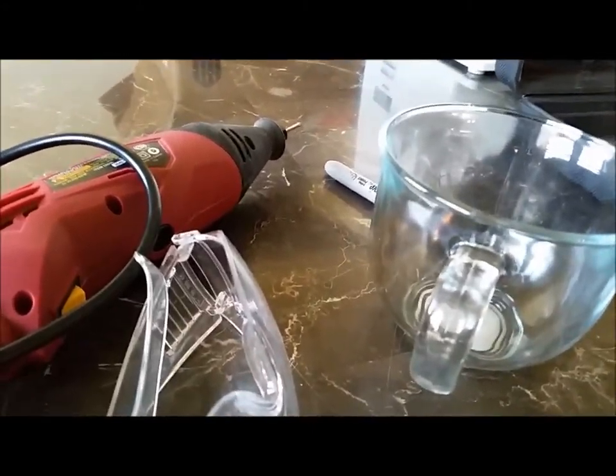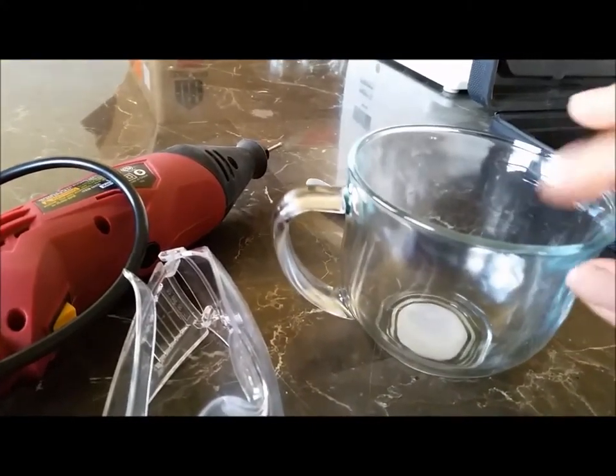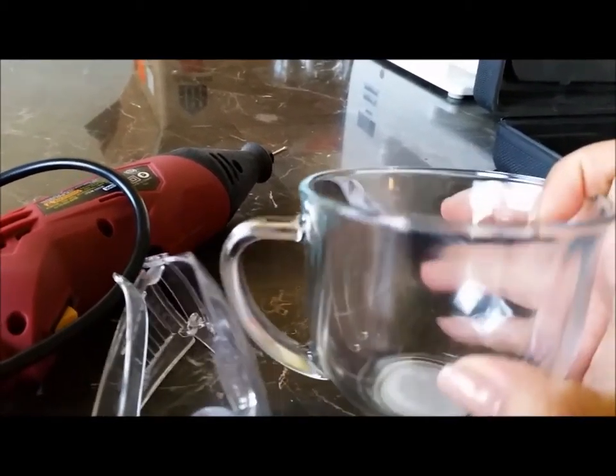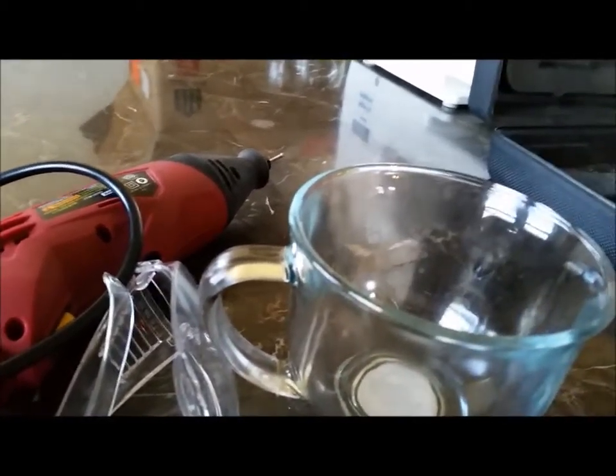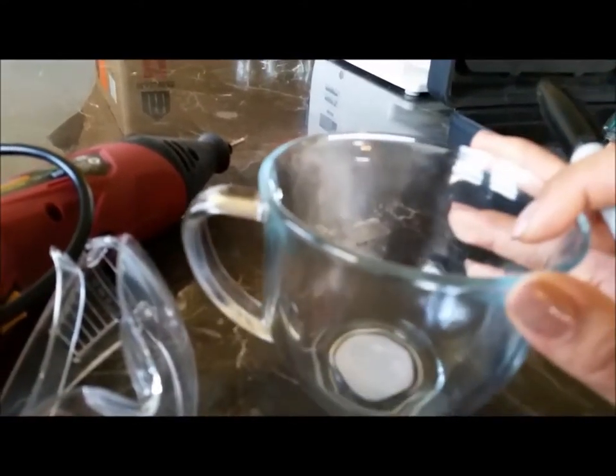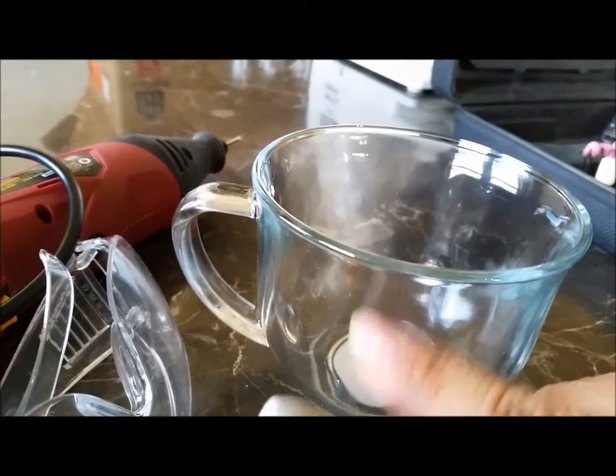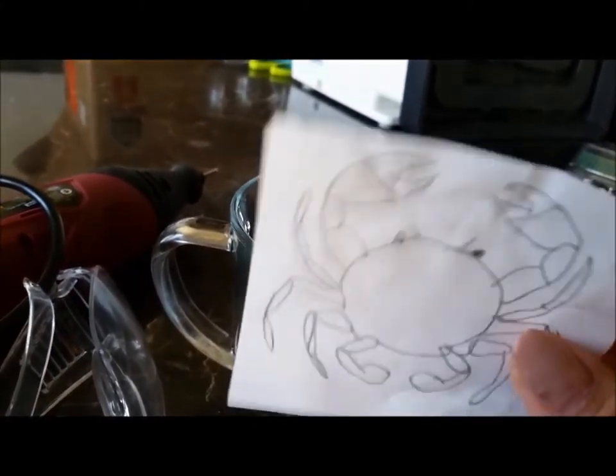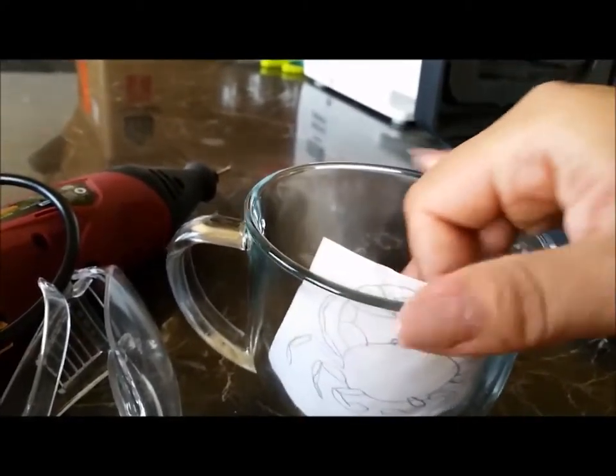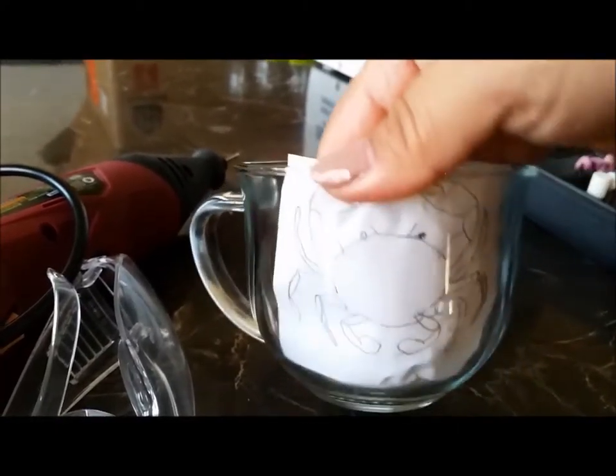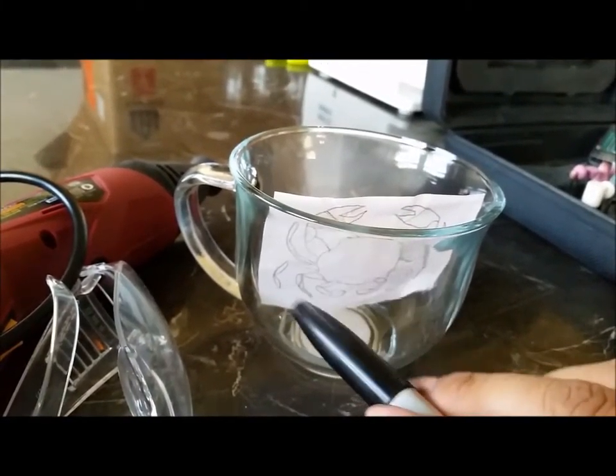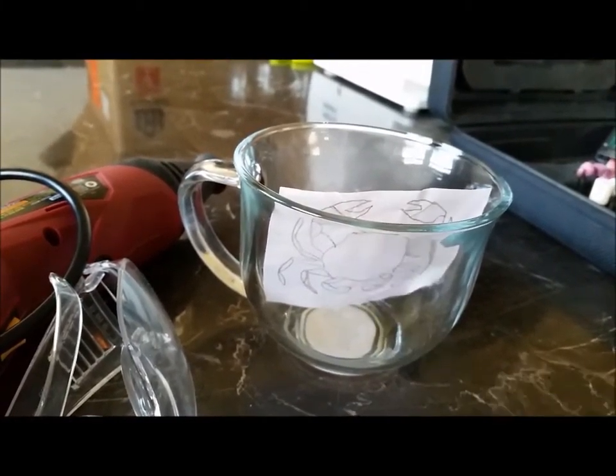So what you need to do is you need to either hand draw onto the mug, and you can use a permanent marker. If you mess up, you just need a little bit of rubbing alcohol, and you can wipe it off easily. So what I like to do is draw an image first, and since it is glass, I can just stick it in the inside, and then I can trace on the outside with my permanent marker and drawing my image directly onto the surface.